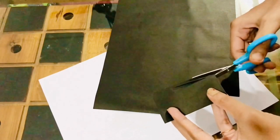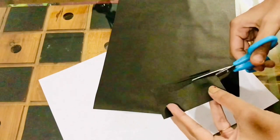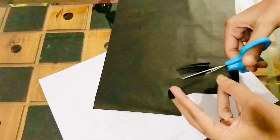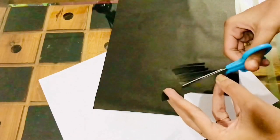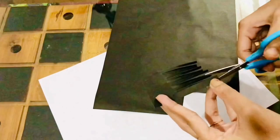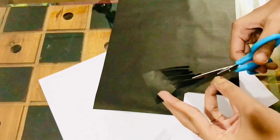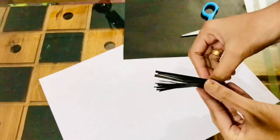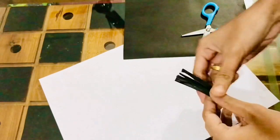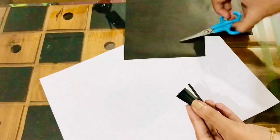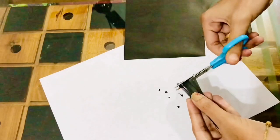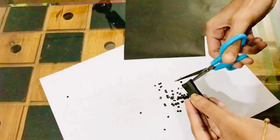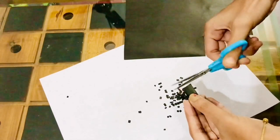Now we need to cut the paper into small pieces. We'll cut both the black and white paper. Here we have the black and white paper ready to cut into pieces.